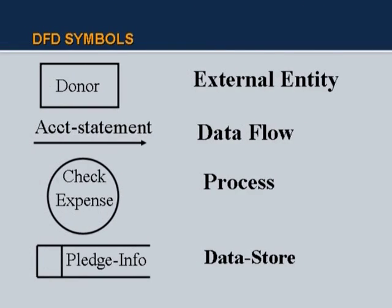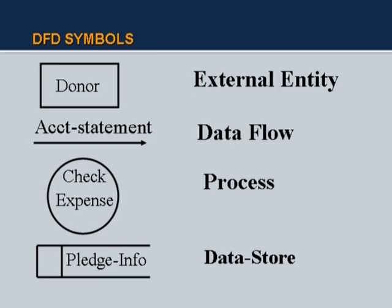Here are the basic DFD symbols. An external entity — for example, a donor to an institution. A data flow — for example, an account statement. A process — for example, 'check expense,' where all programming logic goes. Pledge info is a store. A pledge means a commitment to give some donation in future, so you will keep the donor's name, address, the amount pledged, and the modus operandi — whether he pays all next month or one-third over three years.